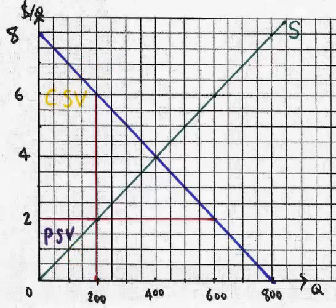This is equivalent to the problem when the price was 6, except now the producer surplus value is 200 and the consumer surplus value is 1000 — these two cases are mirror images of each other. We see that when only 200 units are supplied, we lose $400 worth of total surplus value compared to the equilibrium.